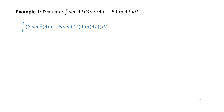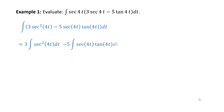The first portion: put the 3 to the left of the integral symbol — it's a constant — giving 3 times the integral of secant squared 4t dt. Likewise for the second part, we move minus 5 to the left of the integral symbol, giving minus 5 times the integral of secant 4t times tangent 4t dt.